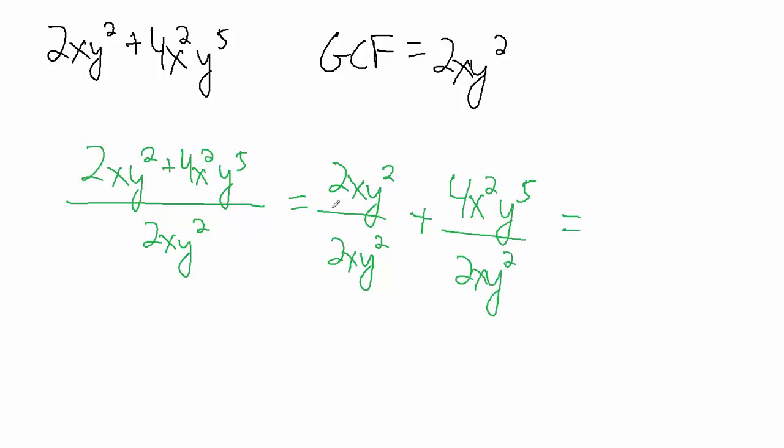Now how does that simplify? Well notice here we have 2xy squared divided by itself. So if you take something and divide it by itself like that, you're just going to get 1. So this whole thing here is just 1. Now it doesn't turn into nothing, so be careful about that. It turns into 1, not just nothing. It does give us a term that's just 1 here. So we have a 1 here, and then plus what?